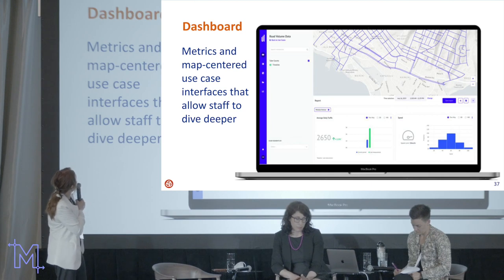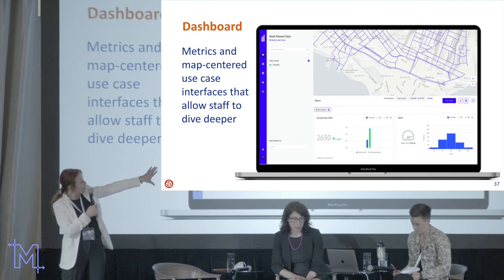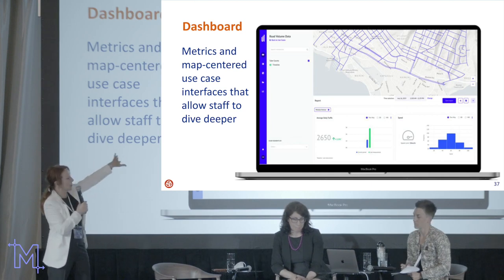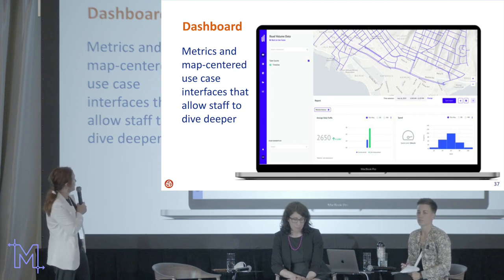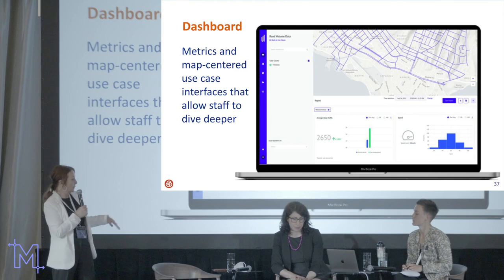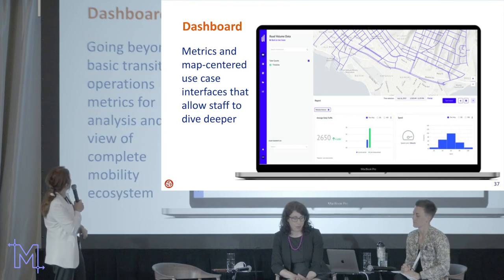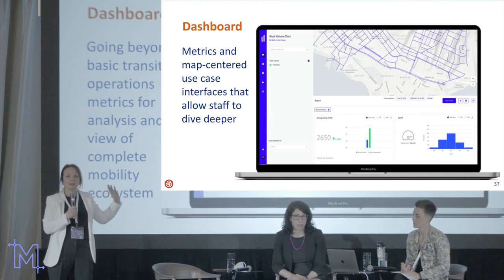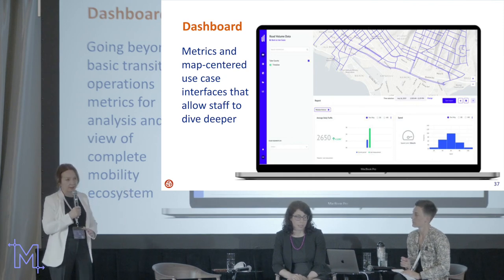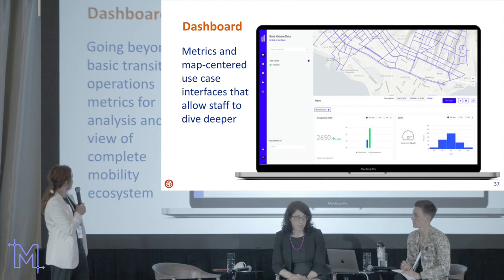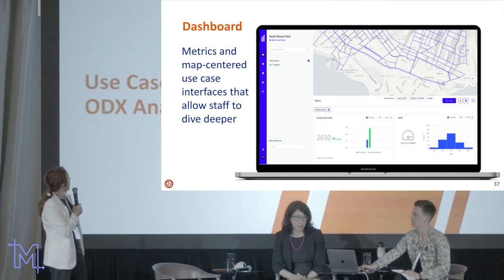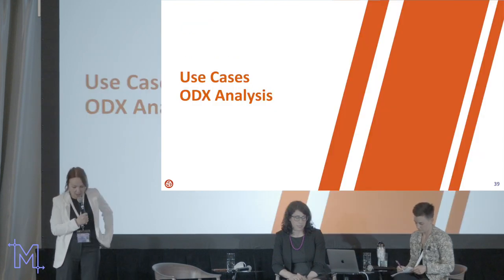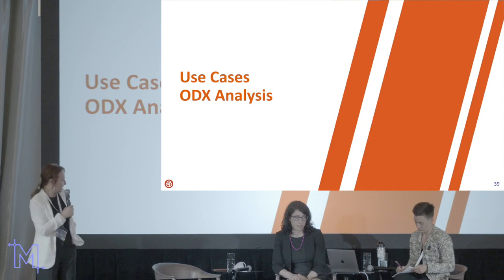Here's an example of the Urban Logic dashboard — it has metrics and a map connected to it to allow staff to really dive deeper. This goes beyond basic service performance and NTD reporting, looking at much larger ecosystem-level things. The first use case I'll talk about is the ODX analysis. As most transit agencies, we have a tap-on system. Urban Logic took that tap-on data and developed an ODX model pretty quickly, providing TriMet with new insights into travel behavior and beyond — and what we're beginning to see is beyond our expectations.